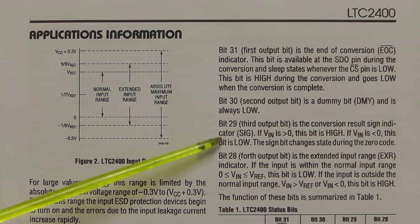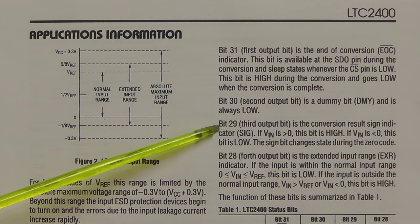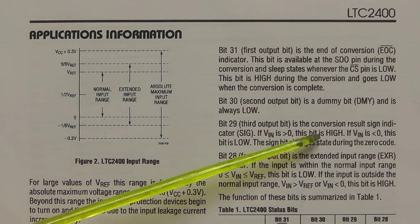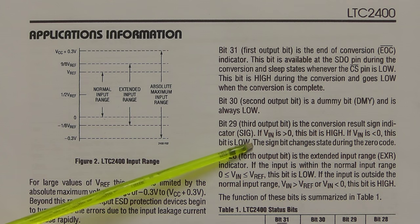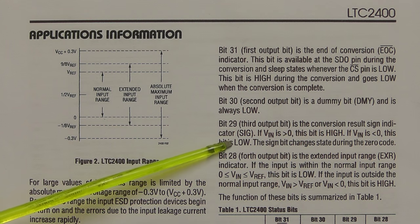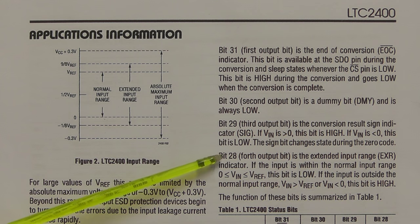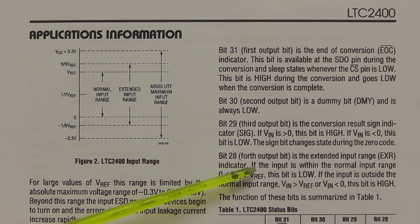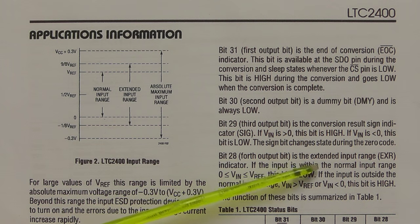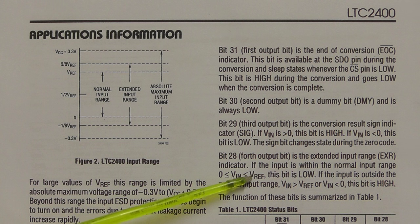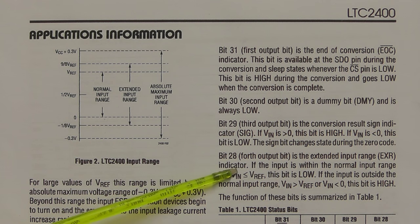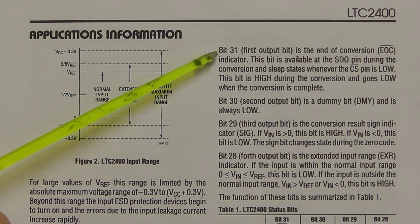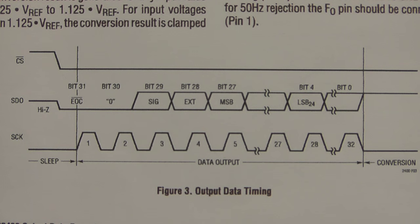Bit 30 is simply a dummy bit so we can ignore that. Bit 29 is what they call a conversion result sign indicator — it tells us whether the input is either a positive or negative voltage; we're not going to use that today. Bit 28 is an indicator of whether the input range has been exceeded, but again we're not going to use that today. So the one we'll focus on is bit 31 to tell us when the conversion is complete.